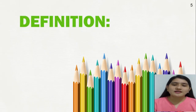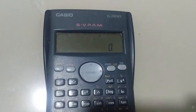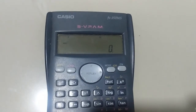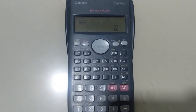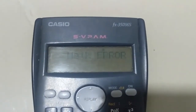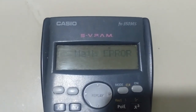We can write a rational algebraic expression as p over q, where p is the numerator and q is the denominator. The denominator should not be equal to zero. Using a calculator, let's see what happens if you divide a number by zero. For example, 9 divided by zero gives a math error, meaning you cannot divide any number by zero — it will give an undefined result.